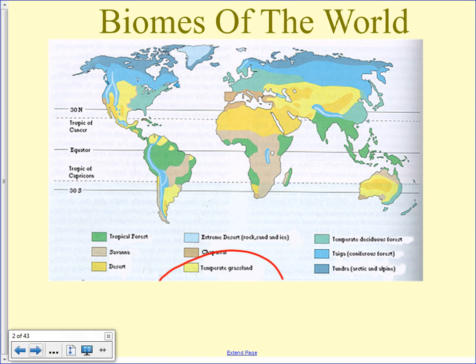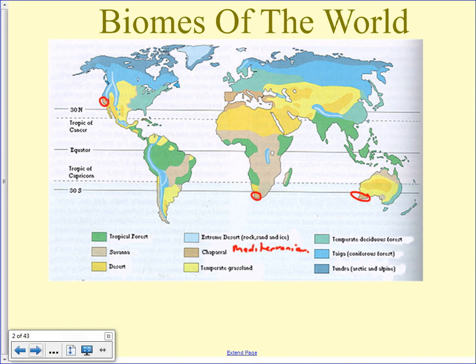Chaparral is also often called the Mediterranean climate. You see it almost primarily around the Mediterranean — a tiny bit in Southern California, on the tip of southeast Australia, and a tiny bit in Southern Africa. It can be very hot and very dry in summertime, and they get a lot of different types of vegetation growing there that wouldn't normally grow in that type of climate. It's a very unique kind of biome.